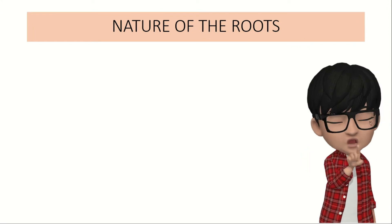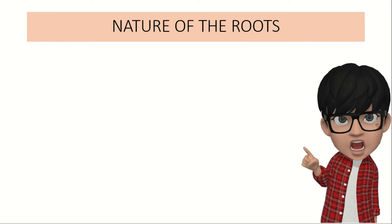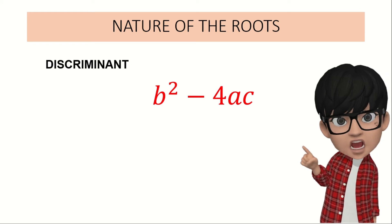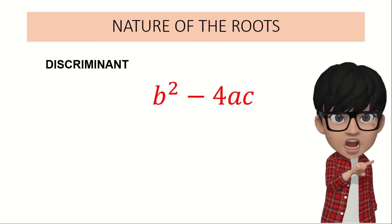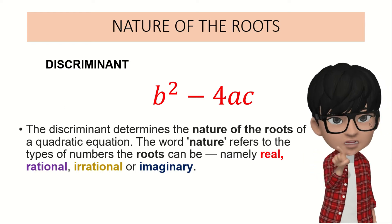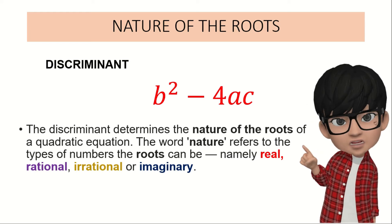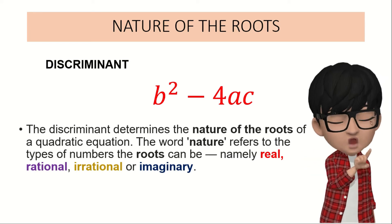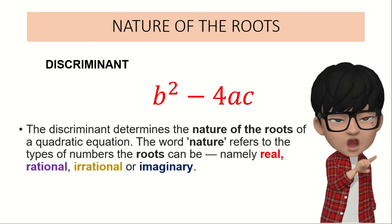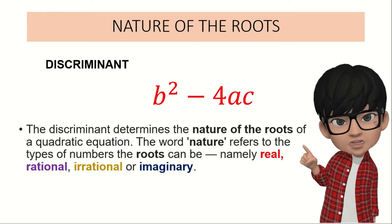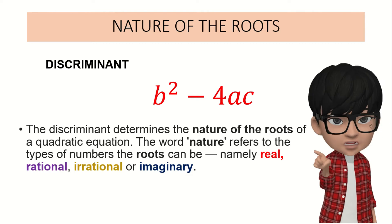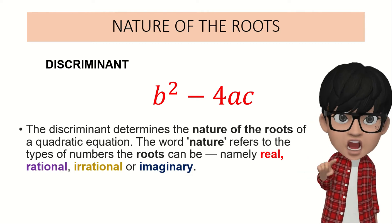Let's discuss first the discriminant formula, that is b squared minus 4ac. The discriminant determines the nature of the roots of a quadratic equation. The word nature refers to the types of numbers the roots can be, namely real, rational, irrational, or imaginary.